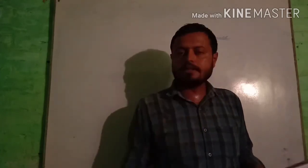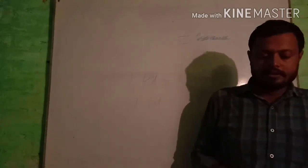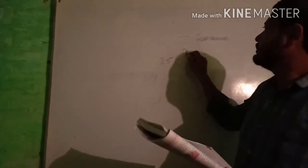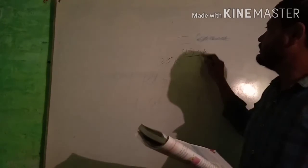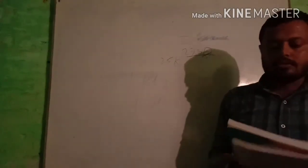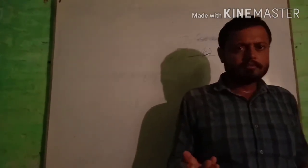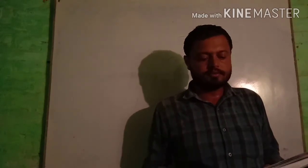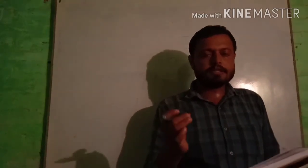Temperature के different units हैं: Kelvin, Celsius, और Fahrenheit. हम generally temperature को measure करते हैं Kelvin में, जिसको short में K लिखते हैं. जैसे 25 Kelvin, 273 Kelvin - यह temperature का measurement है. SI unit of temperature is Kelvin. हम लोग generally degree Celsius और Fahrenheit में भी use करते हैं. Thermometer पर degree Celsius और Fahrenheit दोनों का indication होता है.